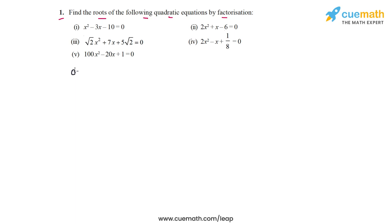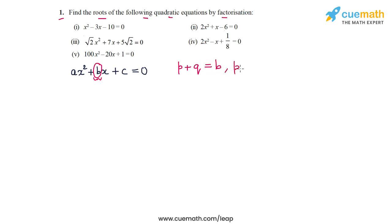So how do we do that? Suppose we have a quadratic equation ax² + bx + c = 0. What we have to do to factorize is we have to split this middle term bx, or coefficient b, into two parts p and q, such that p + q = b and p × q = a × c. This is how we split the middle term in this question.